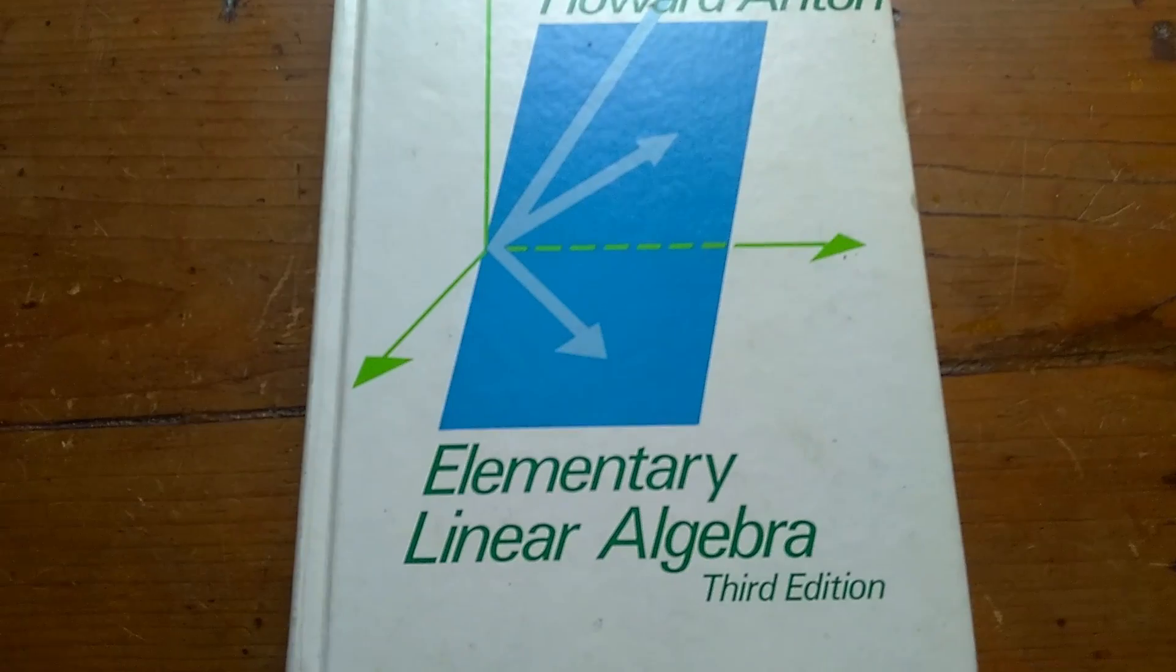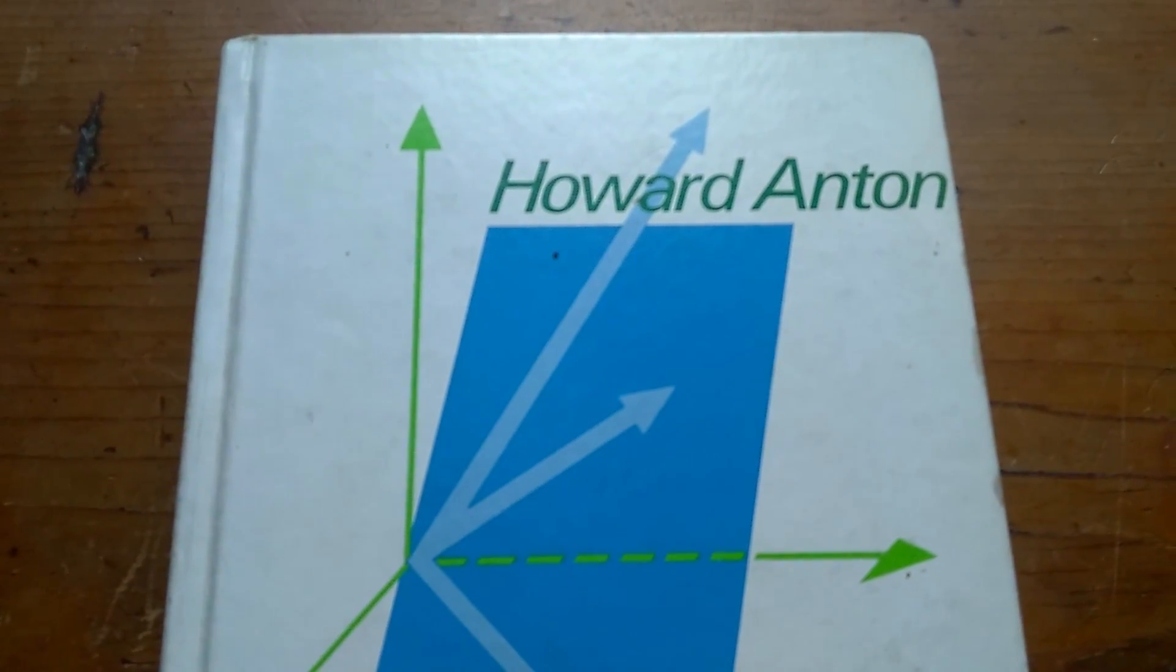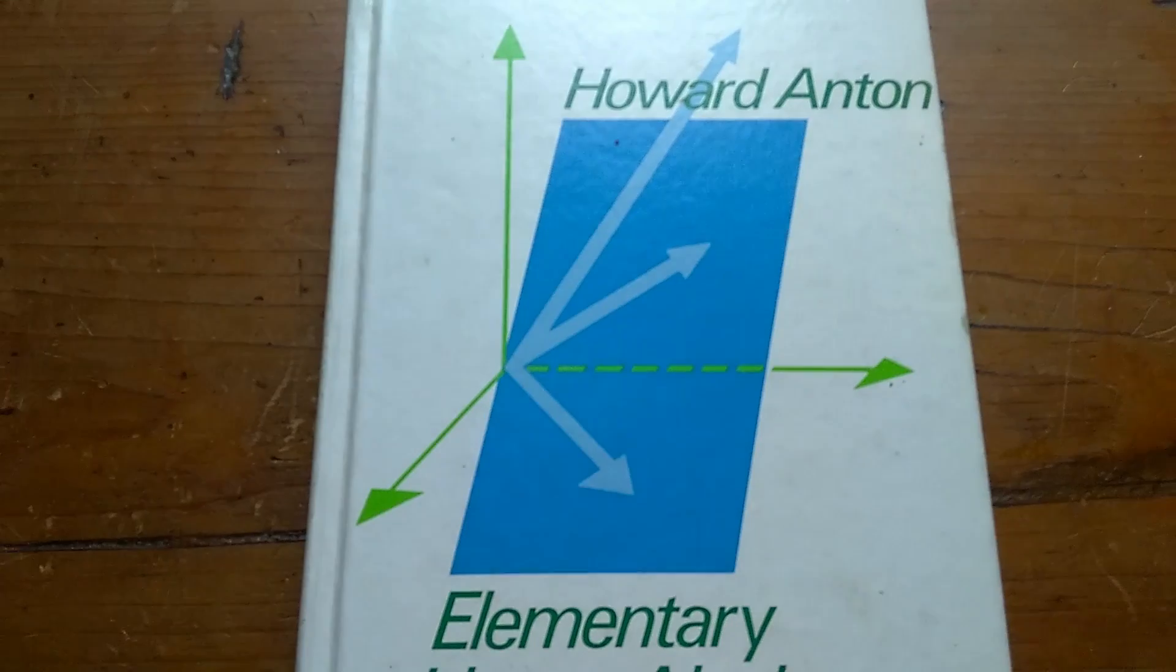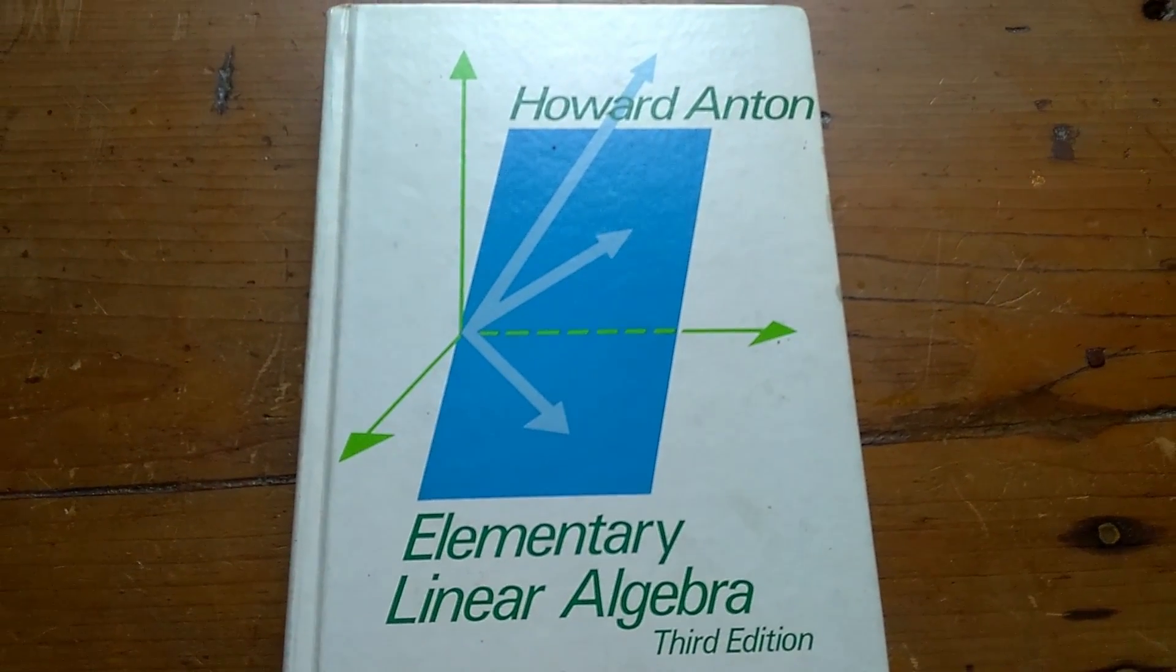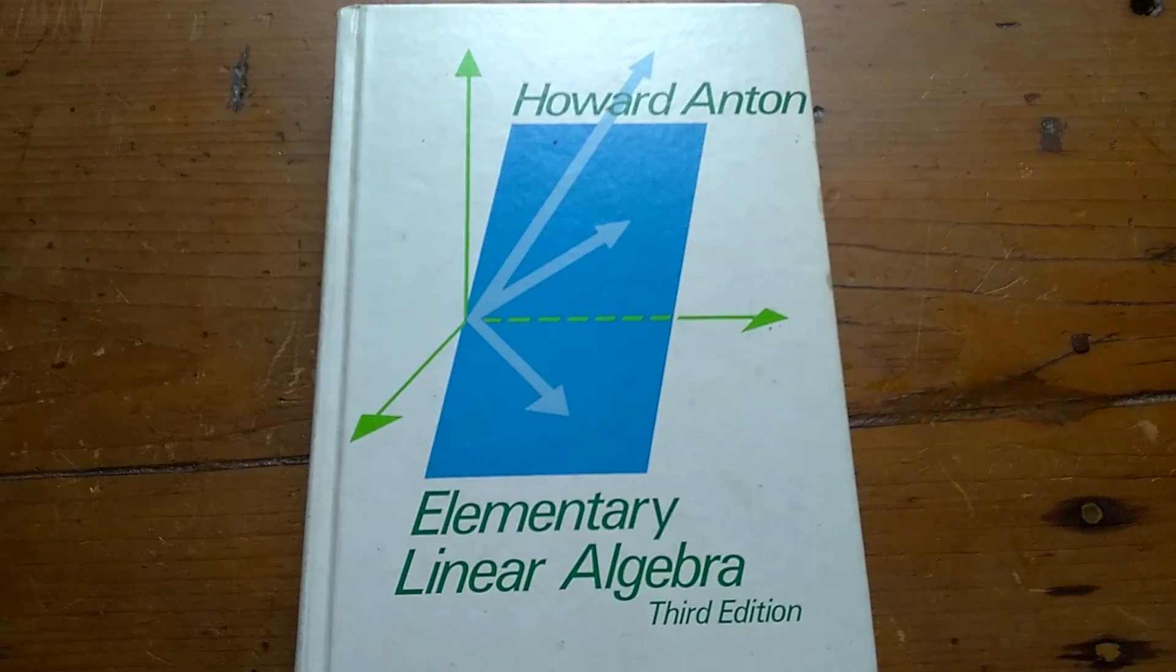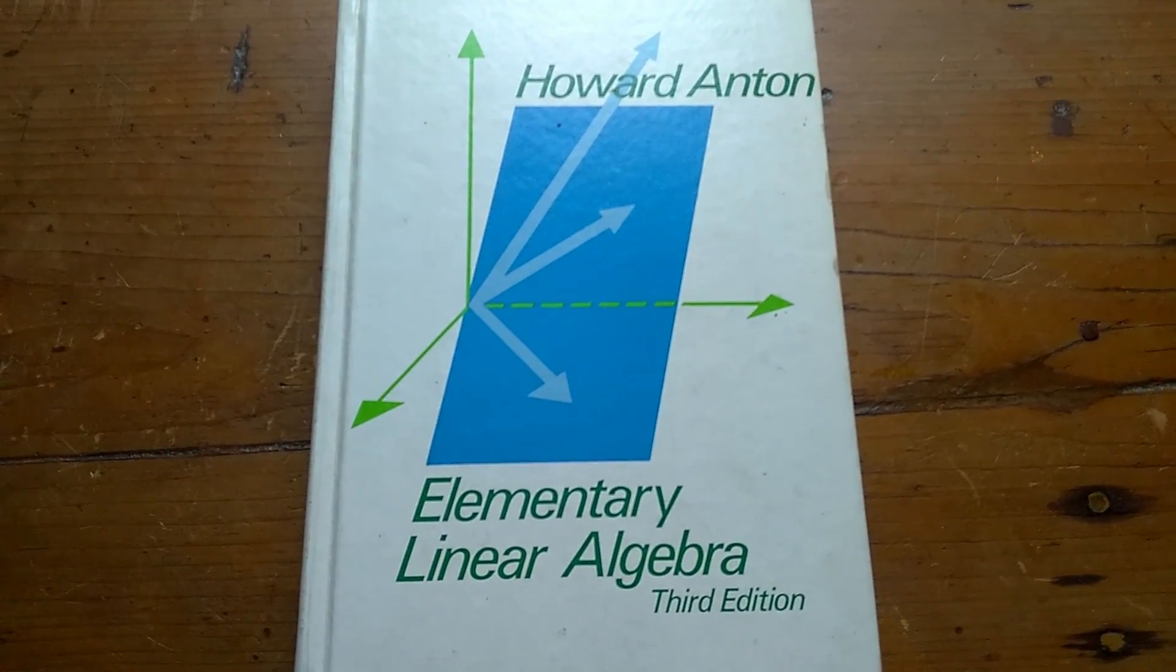Again, the book is Elementary Linear Algebra, and it's written by Howard Anton. I picked this book up years ago for a few dollars as a supplement to my other linear algebra books. And I think what I found most refreshing about this book was how easy it was to read compared to many of the other books I have. That's it.